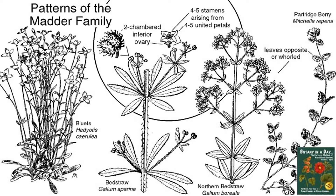The flowers of the madder family may appear as singles or as many small flowers clustered together. These blossoms are typically made up of 4–5 stamens arising from 4–5 united petals, and the corollas are generally tubular and regular in shape. The main distinguishing features of the family are the characteristic stipules and the inferior ovaries.